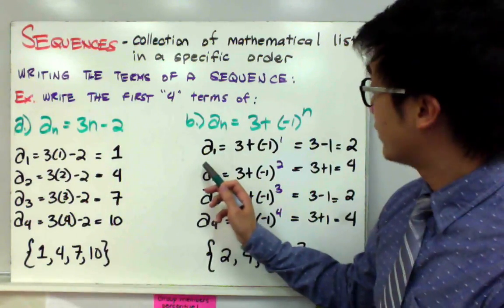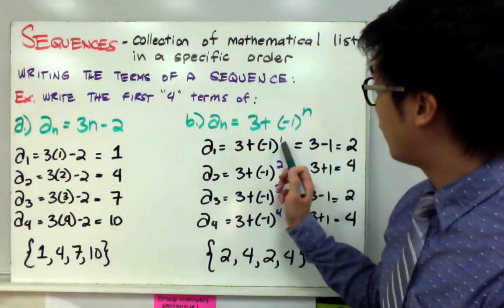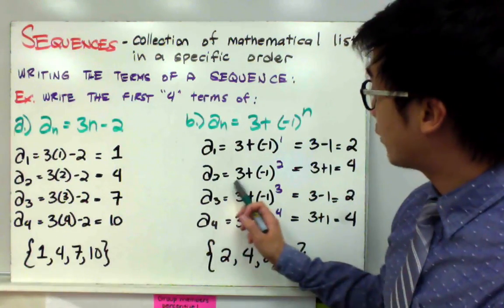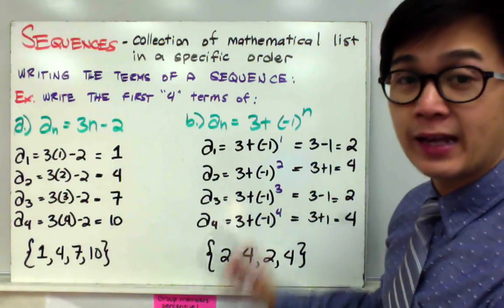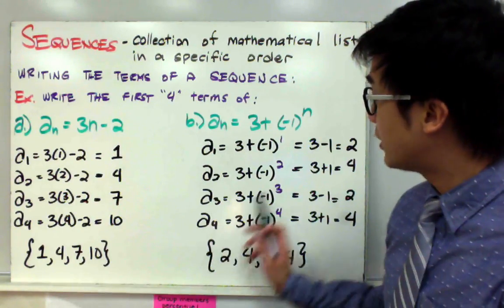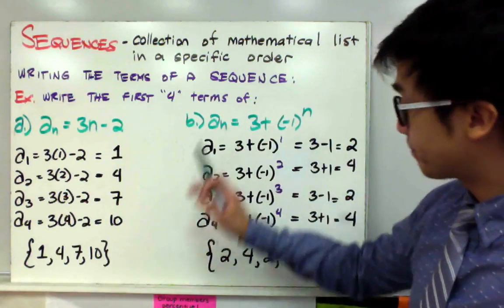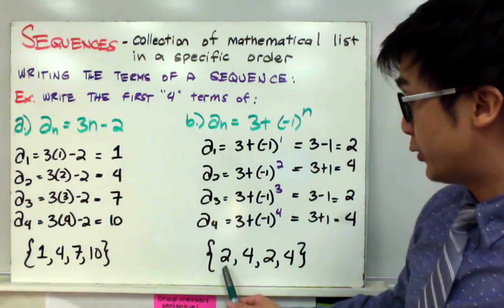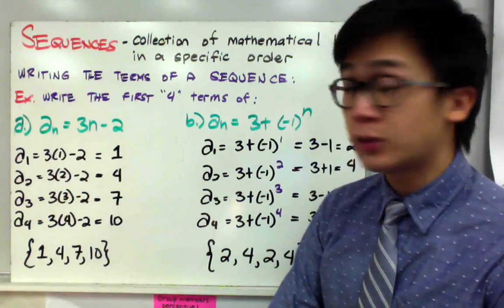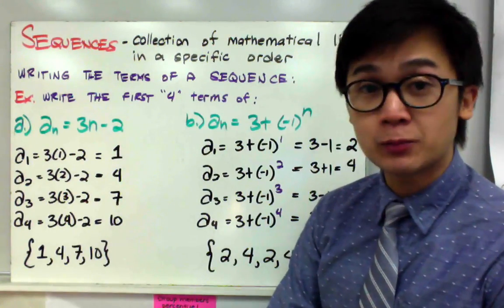For a sub 1, replace n by 1: you get 3 plus negative 1 raised to 1. Negative 1 raised to 1 is negative 1, so 3 minus 1 equals 2. For a sub 2, it's 3 plus negative 1 raised to 2; negative 1 squared gives positive 1, so 3 plus 1 equals 4. For a sub 3 and a sub 4, replace n by 3 and 4, and you get 2 and 4. So the first four terms are 2, 4, 2, 4. This is done using direct substitution into the formula.